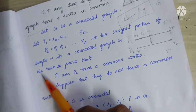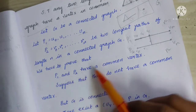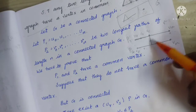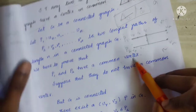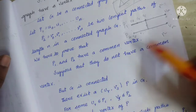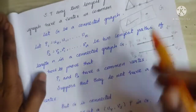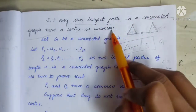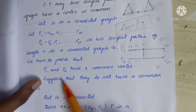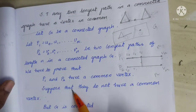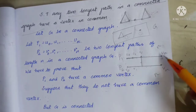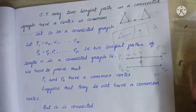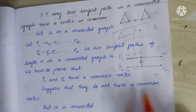This is connected graph G. We have to prove that P1 and P2 have a common vertex. Now let's prove it. Suppose that they don't have a common vertex.